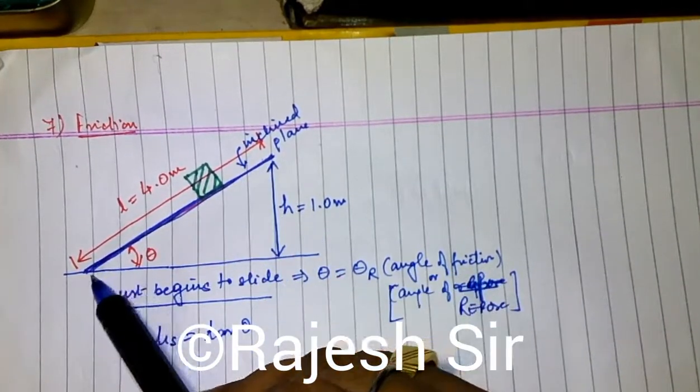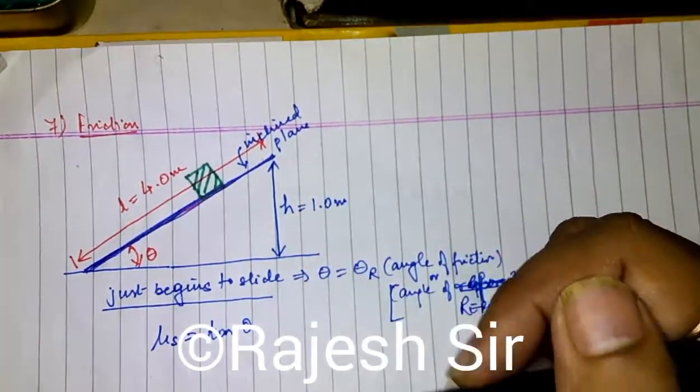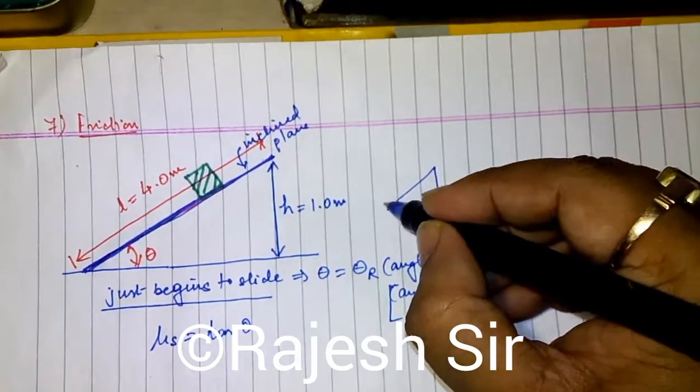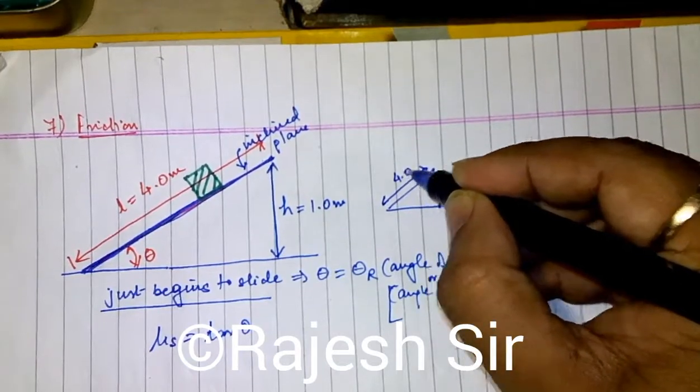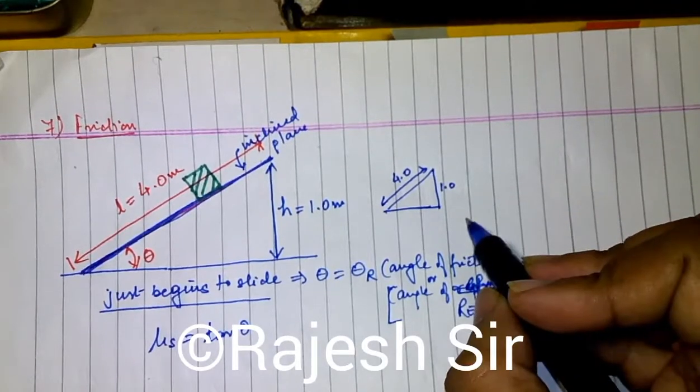Inclined plane is 4 meter, height is 1 meter. So, tan theta, if we have a right angle triangle, which is 4 meter hypotenuse and height is 1 meter, you can find this side from Pythagoras theorem.